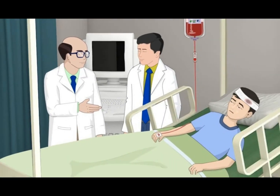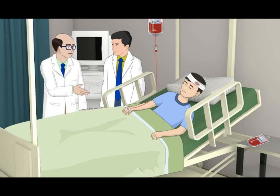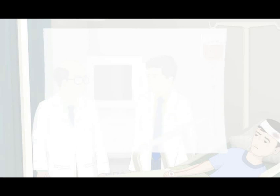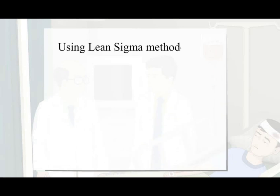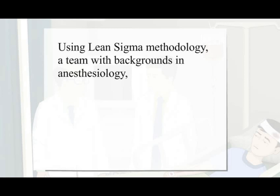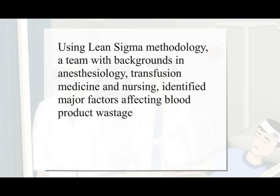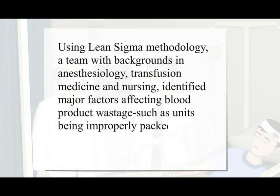We have to work on this issue. Let's apply Lean Six Sigma and see what the result will be. Using Lean Six Sigma methodology, a team with backgrounds in anesthesiology, transfusion medicine and nursing identified major factors affecting blood product wastage, such as units being improperly packed and not preserved properly.